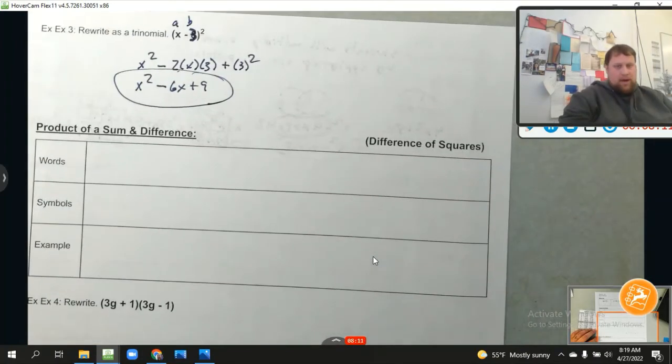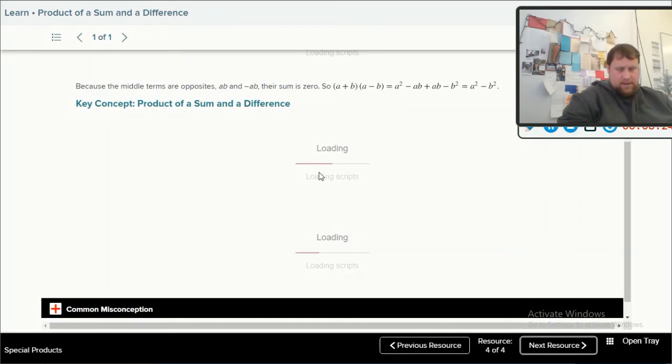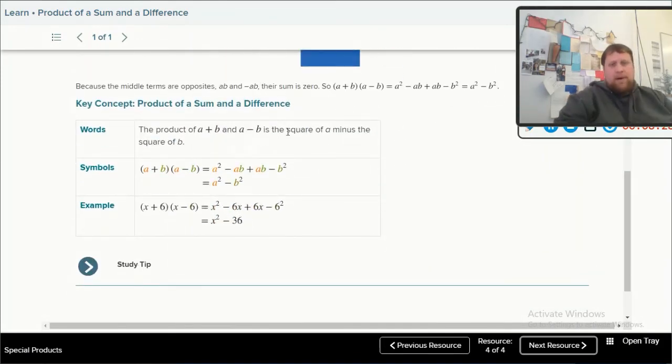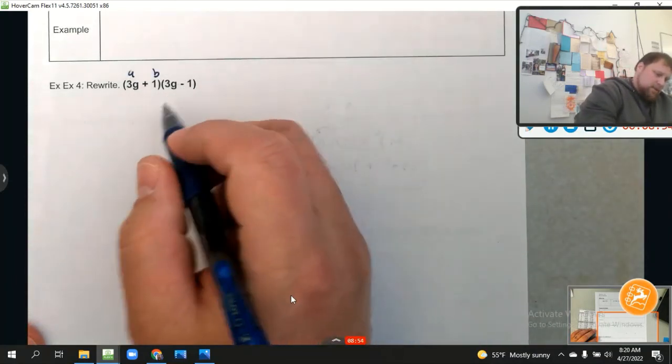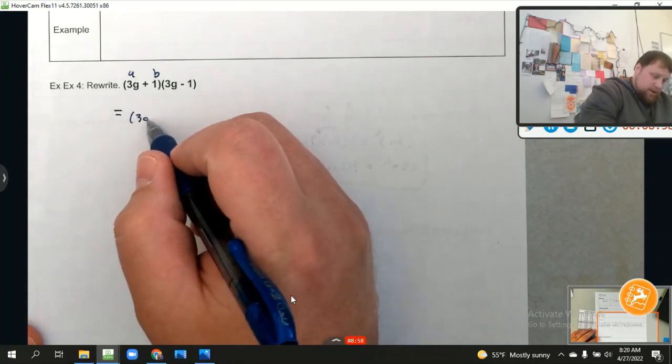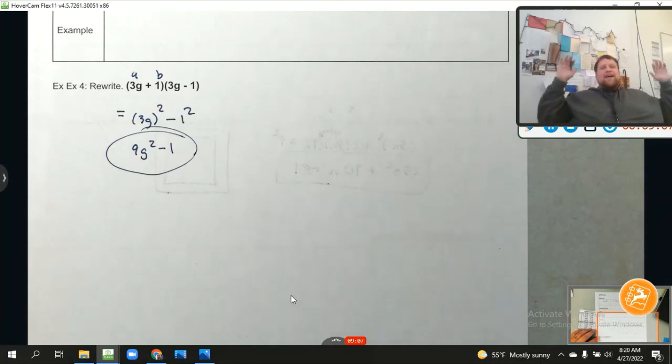And now, our last one called a difference in squares. Again, I'm just going to leave it on for a few seconds, so as soon as it comes on, just pause this after I talk through it. So, the product of A plus B and A minus B is the square of A minus the square of B. So, in other words, if you're ever with A plus B, A minus B, at the end of the day, it just equals a² - b² because the middle term will cancel out. We see that in the example here with negative 6x plus 6x. Boom. That cancel out. That happens all the time. Pause this. We're heading back to our regularly scheduled program. So, again, if this is A and this is B, and we multiply this out, this is just going to equal (3g)² - 1², which is what? 9g² - 1. Boom. That easy. Use these special products to help you out. Peace out.